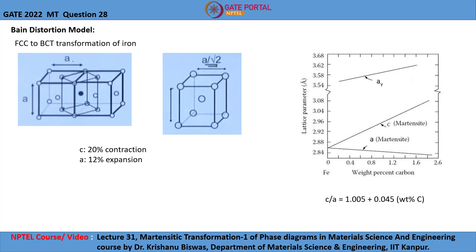Here, A is the lattice parameter of the austenite, that is A-gamma. On joining these eight atoms as the corner atoms and the common face-centered atom, we get a BCT structure as shown. This vertical dimension is the same as that of the austenite, A-gamma, and this value of lattice parameter will be A-gamma times root 2. When austenite transforms to martensite, the C axis undergoes contraction by about 20% and the A axis expands by about 12%.